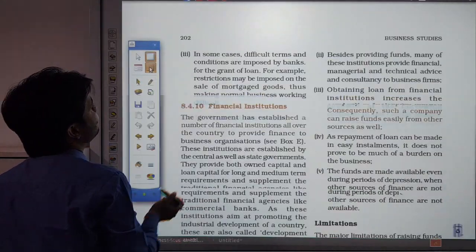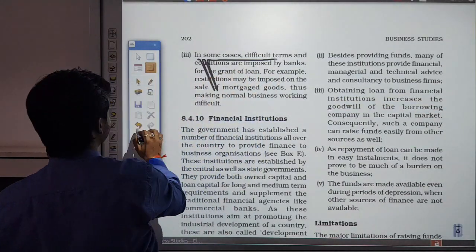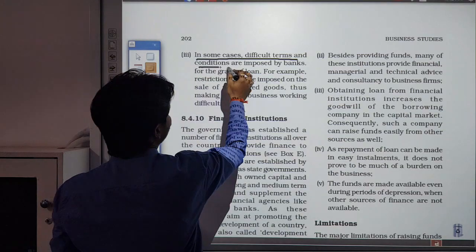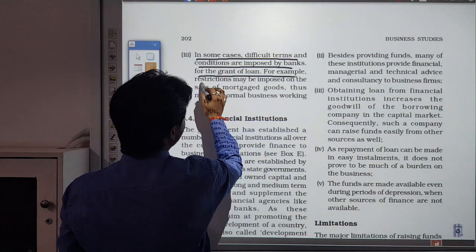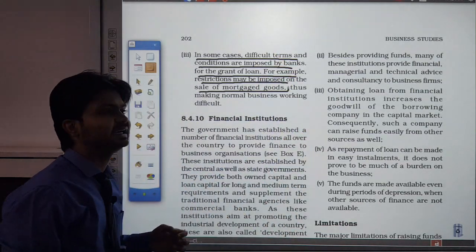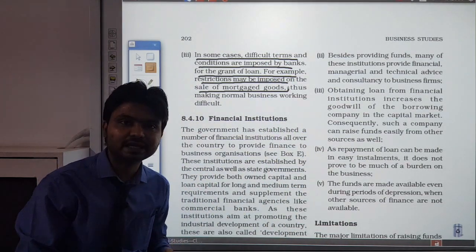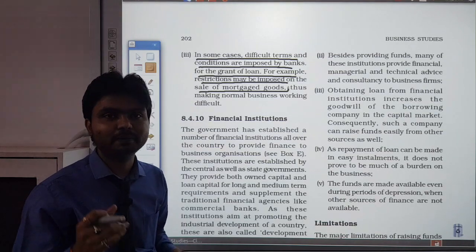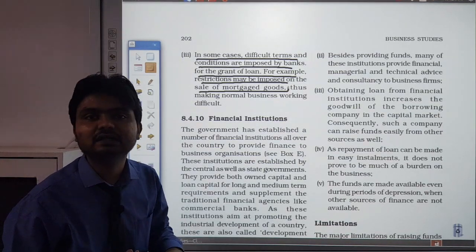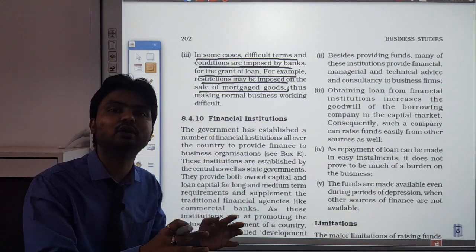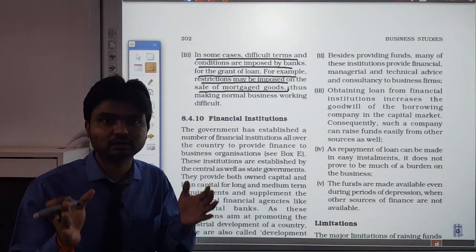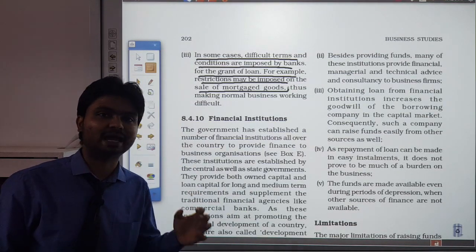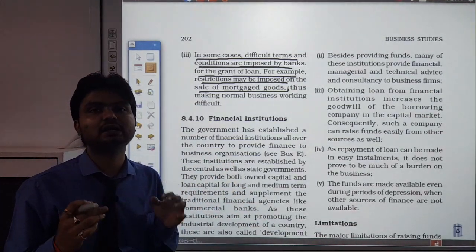Point number 3 is that in some cases, difficult terms and conditions are imposed by the bank for grant of loan. For example, restrictions may be imposed on sale or mortgage of goods. That means the property kept on mortgage basis with the bank — the bank keeps charge on that asset. The property mortgaged for the bank cannot be sold until the loan is returned, as the bank's right has been created on that particular commodity. Until release from the bank, the property rights remain with the bank.